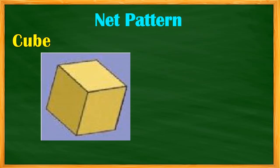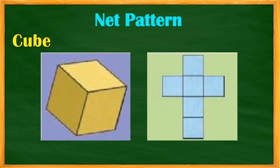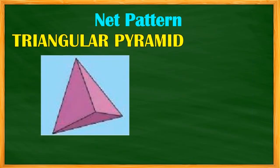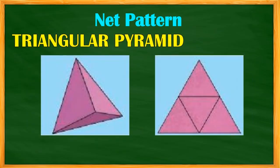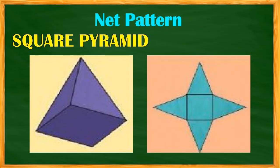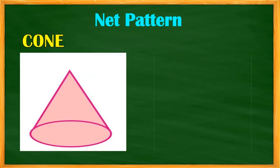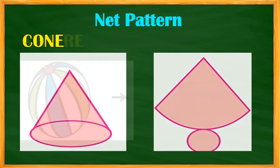Now let's identify the net patterns of the different solid figures. The net pattern for the cube and the rectangular prism look very similar, but the sides of the rectangular prism are in rectangular form. We also have the net pattern for the triangular pyramid, the square pyramid, the cylinder with three pieces, the cone with two pieces, and the sphere with 12 pieces.